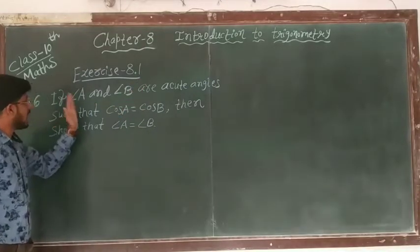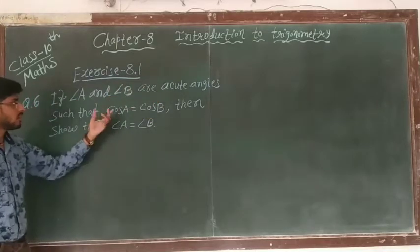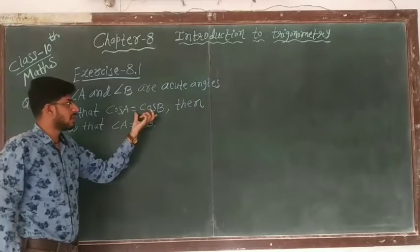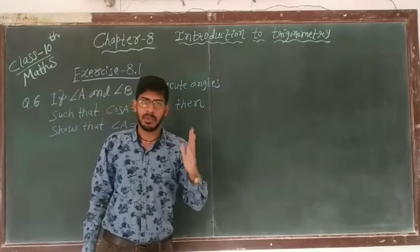If angle A and angle B are acute angles such that cos A is equal to cos B, then show that angle A is equal to angle B.